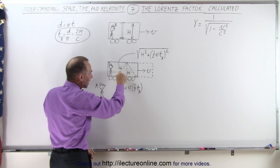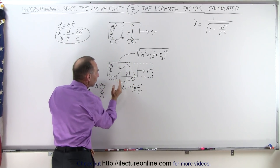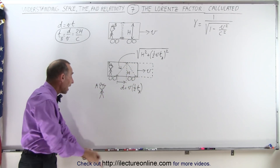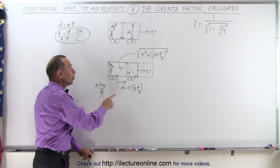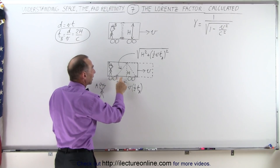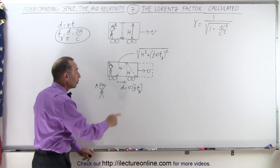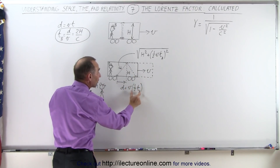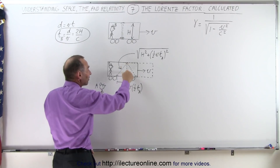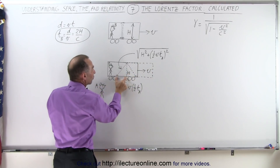We look at this triangle: the height H is the same as before. The horizontal distance is half the distance the railroad car moves during the event, as measured by A — that's the velocity times half the total time, since it takes half the total time for the light to reach the top. So the horizontal side is one-half V times T_A. The slanted hypotenuse is equal to the square root of the vertical side squared plus the horizontal side squared.